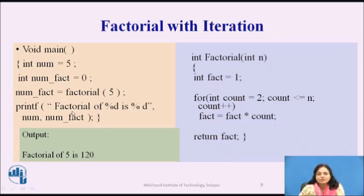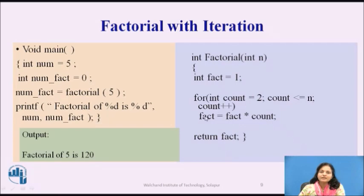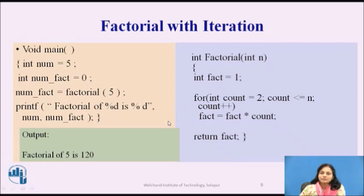In the iteration, we are using a loop. Here we have the number. For factorial of 5, we call for that — so integer 5 will be there. Then it is checked: is it 1? No, then it will go for the next calculation of factorial. The loop runs from 2 up to 5. The variable fact starts at 1, and factorial is multiplied by count each iteration: 1 into 2, then 2 into 3, like this, the factorial of 5 is calculated as 120. This is the simple iterative way, but we need to maintain the variables fact and count.